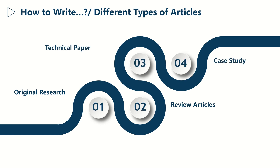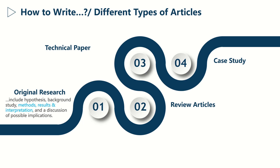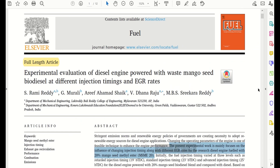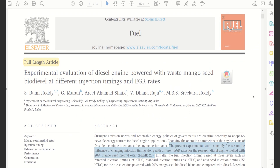Typically, original research articles belong to the category of primary literature. They usually include hypothesis, background study, methods, results, and a discussion of possible implications. Here you need to clearly show what is the practical relevance of your findings. This type of article is usually very long, with word limits ranging from three thousand to six thousand words.